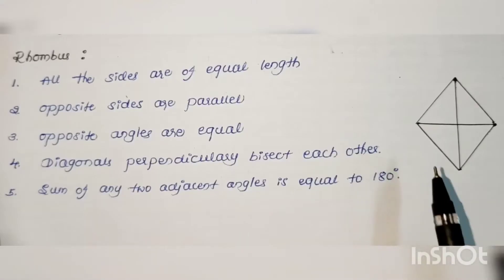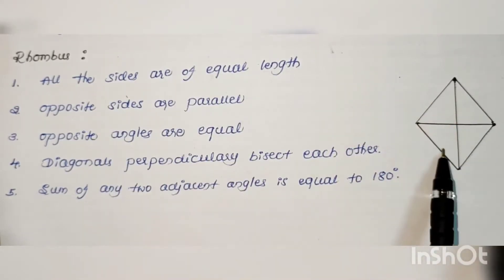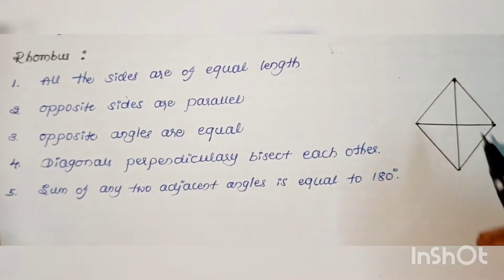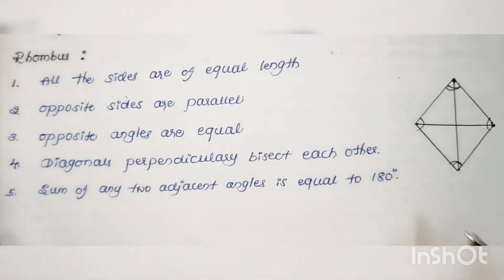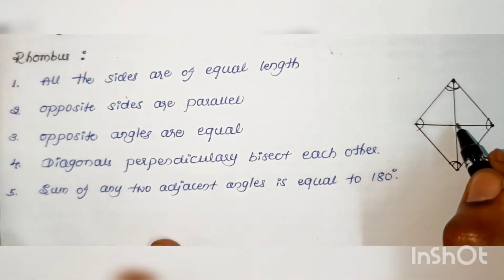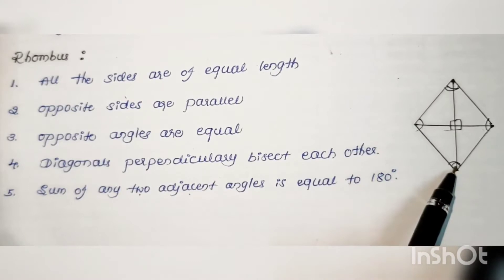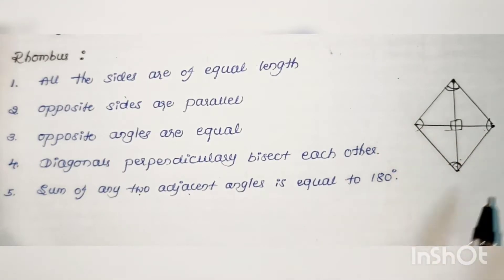Rhombus is a quadrilateral in which all sides are equal and opposite sides are parallel. Opposite angles are equal. The diagonals bisect each other perpendicularly, so the angle formed at the intersection is 90 degrees. The sum of any two adjacent angles is equal to 180 degrees, giving a total of 360 degrees.